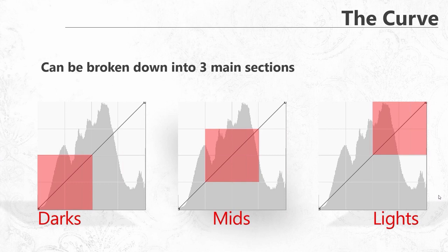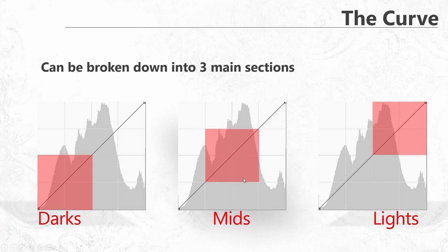So what is the curve? If you're freaked out about it, you've seen it before — it looks like math. But let's break it down. Your darks are everything in that lower left area, your mids are in the middle, and your lights are in the upper right. If you move this line in any way and make it become a curve, that is going to manipulate your photo accordingly. Move it up and your image gets lighter in that section; move it down and it gets darker.